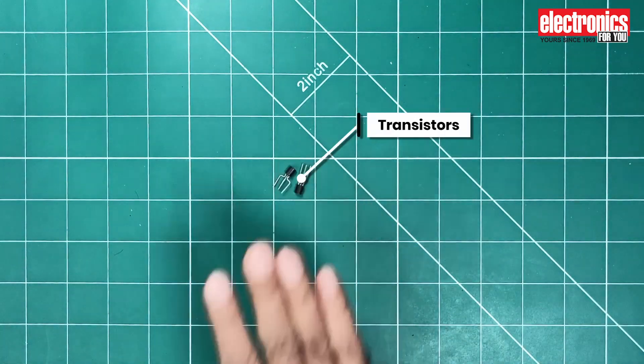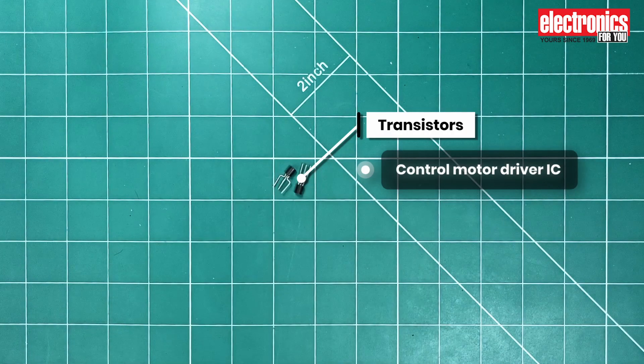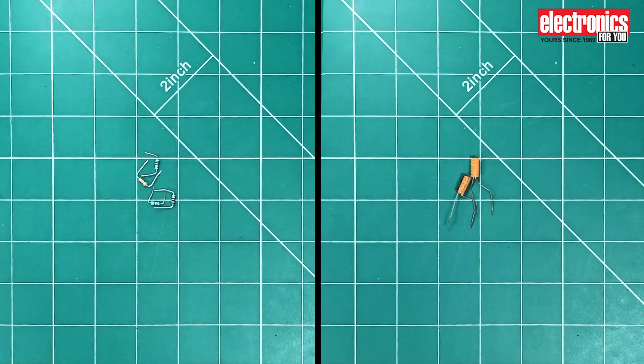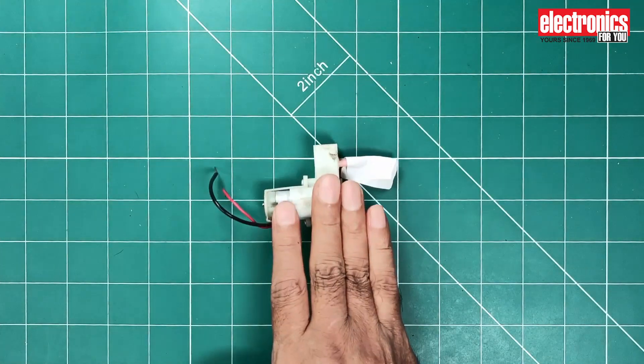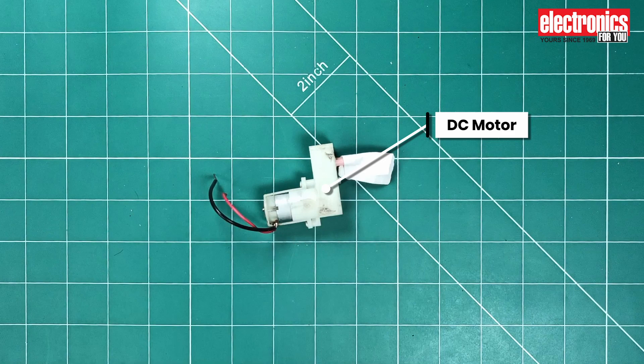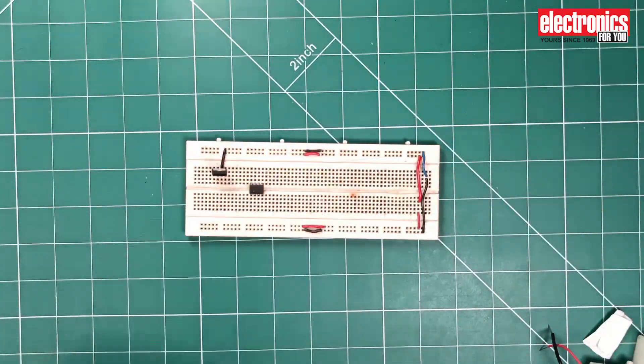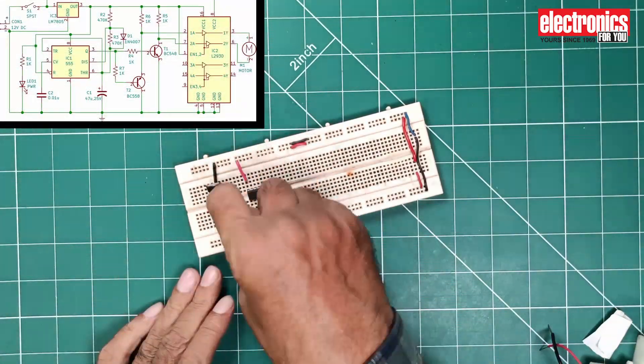Additionally, two transistors are used to control the motor driver IC. Our components include some resistors and capacitors along with a DC motor that will be installed in the wiper mechanism to enable it to move left and right. The circuit is assembled on a breadboard according to the circuit diagram.